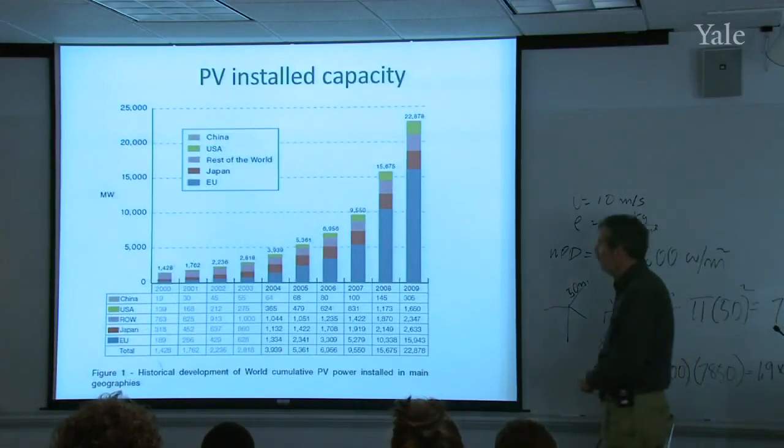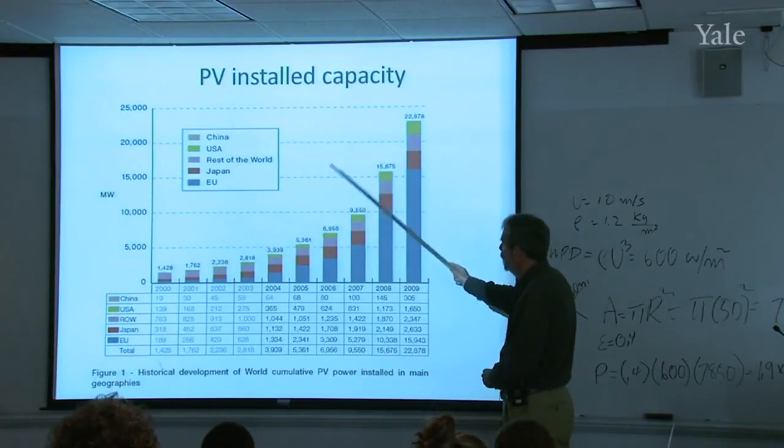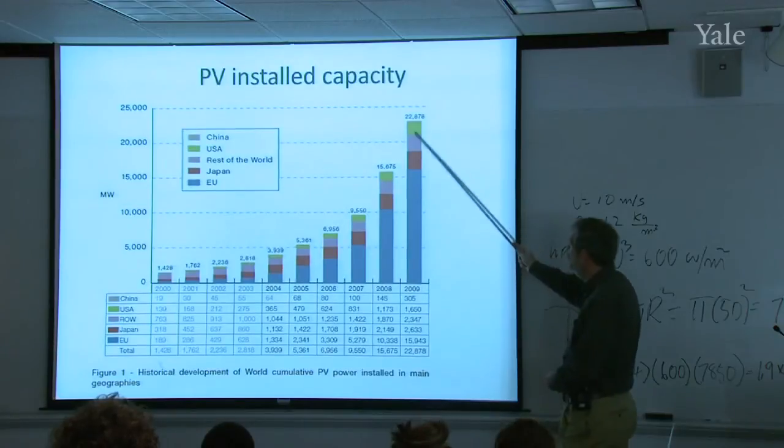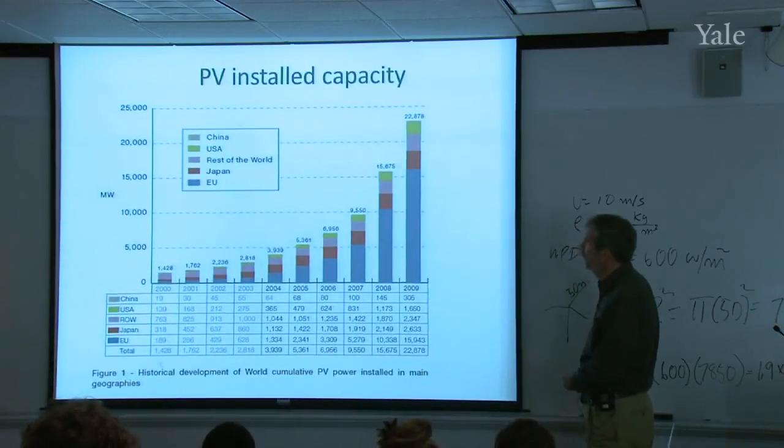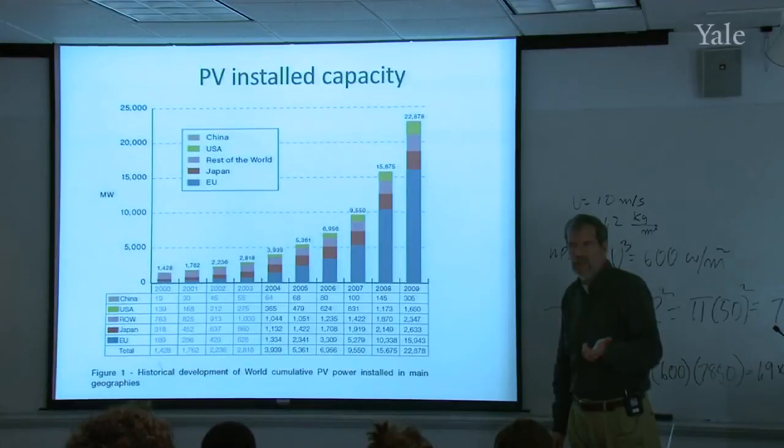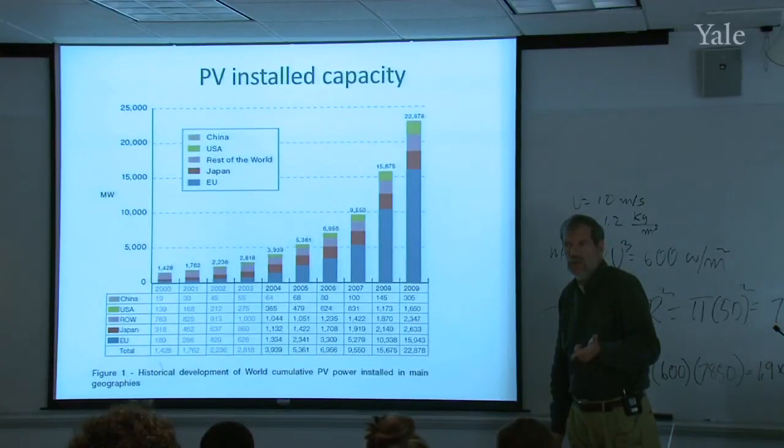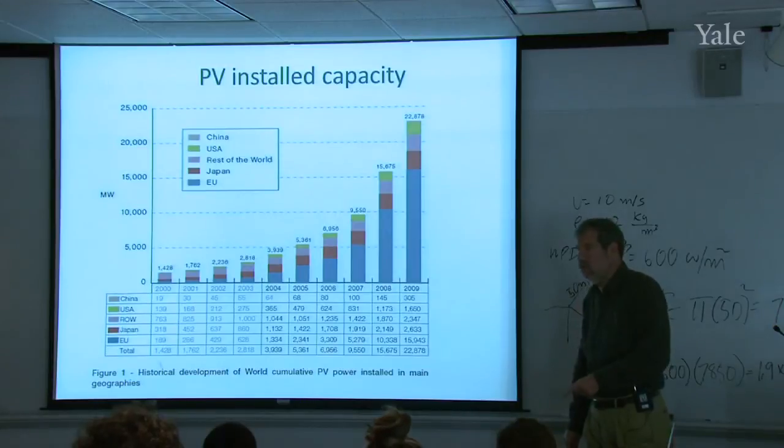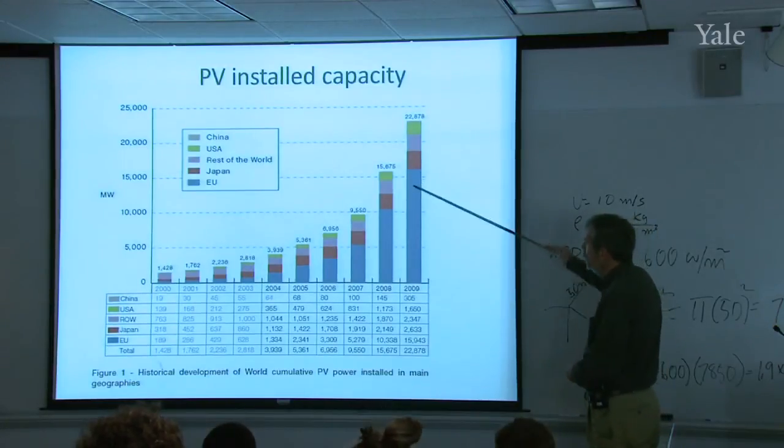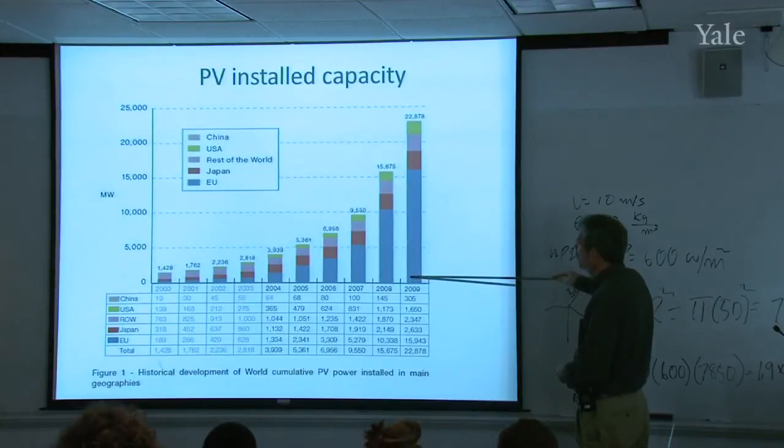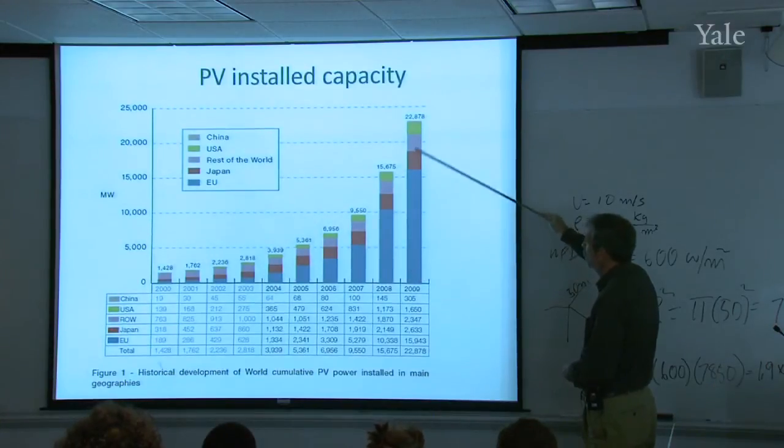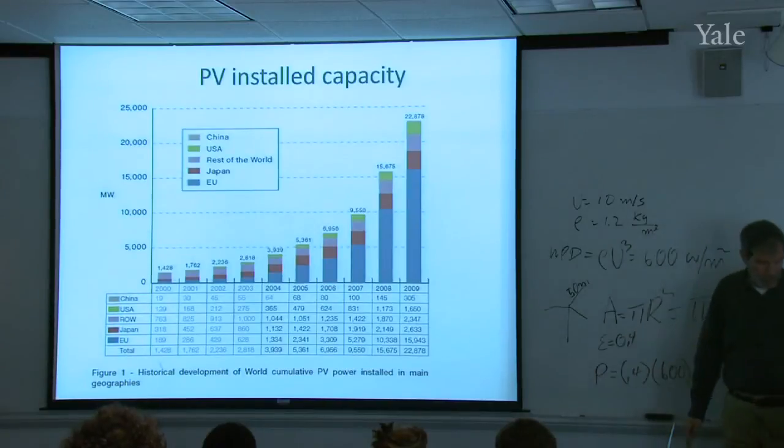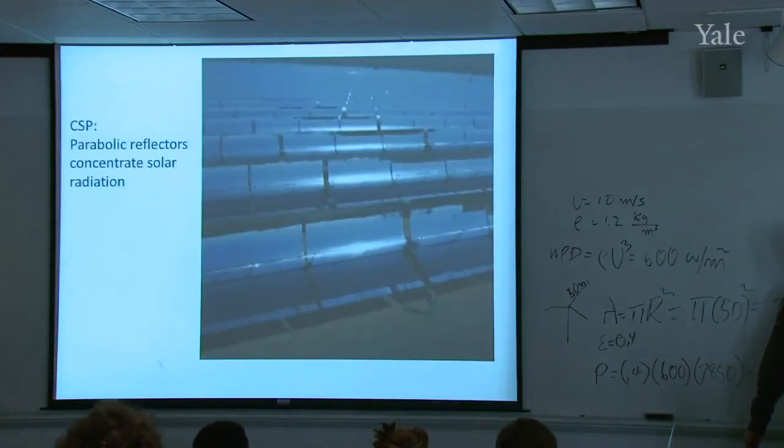Here's the PV installed capacity worldwide. If you sum all this up, 2009, it was 22,000 megawatts. How does that compare with wind? It's an order of magnitude less. Most of it is in the European Union. The rest of the world's not doing that great. Mostly because these panels are expensive. The price is the big factor here.